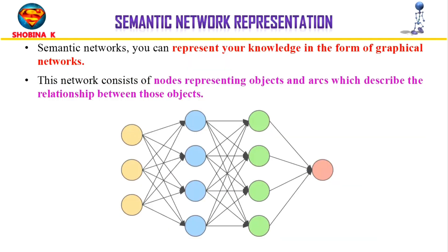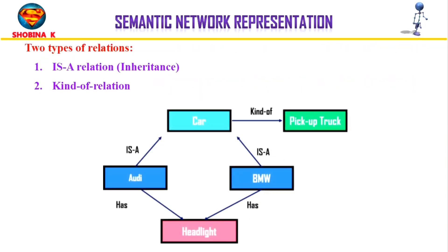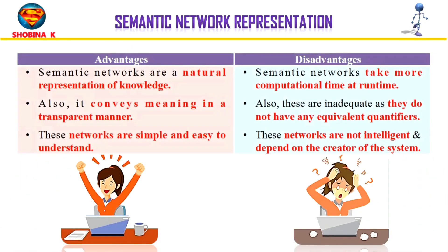The next technique is semantic network representation. In semantic networks, knowledge is represented in the form of graphical networks. This network consists of nodes representing objects and arcs describing the relationships between these objects. It categorizes objects in different forms and links them. There are two types of relations: the 'is-a' relationship, also known as inheritance, and the 'kind of' relation. Advantages include natural representation, transparent meaning, and simplicity. Disadvantages include high computational time at runtime, lack of equivalent quantifiers, and dependence on the system creator.